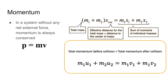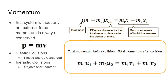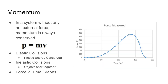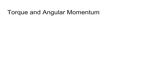This also applies to collisions: momentum before the collision equals momentum after. There are two types of collisions — elastic collisions, where kinetic energy is conserved, and inelastic collisions, where energy is not conserved. In perfectly inelastic collisions, the objects stick together and the system loses the most energy. Another key concept is force vs. time graphs: the area under the curve equals the impulse, or the change in momentum.